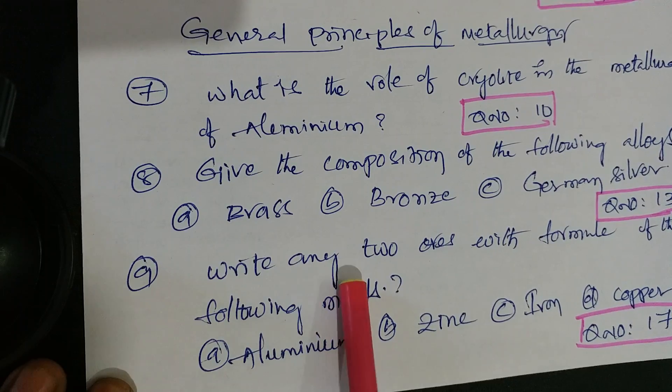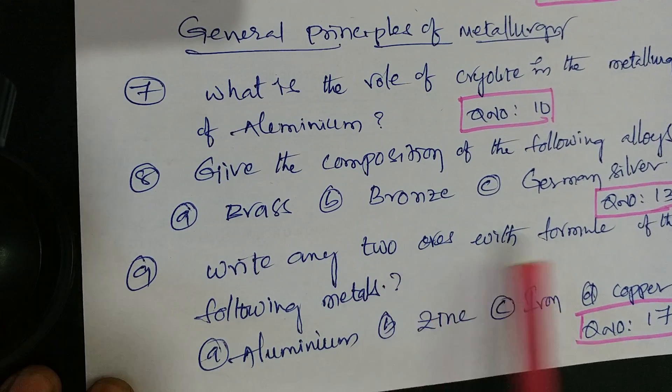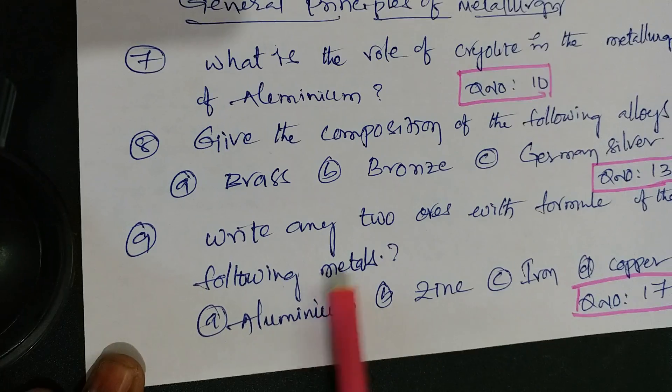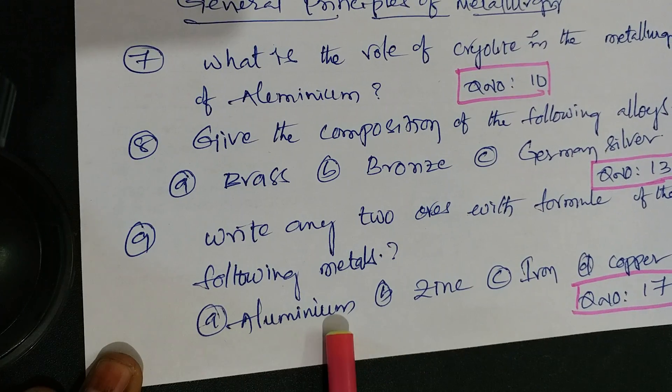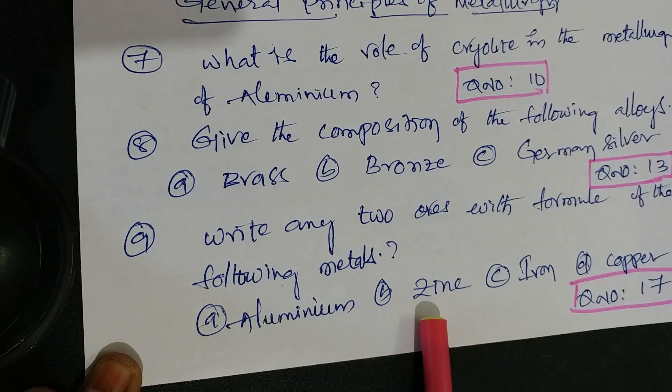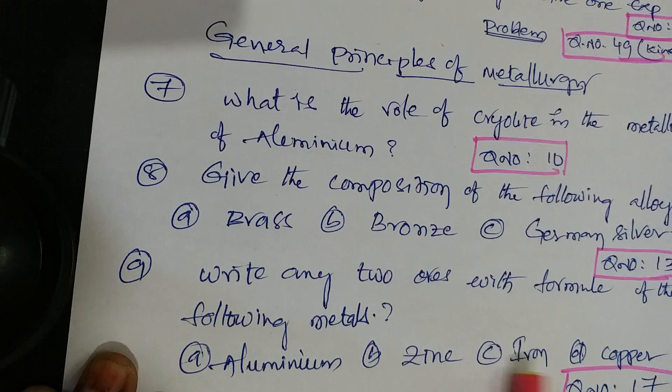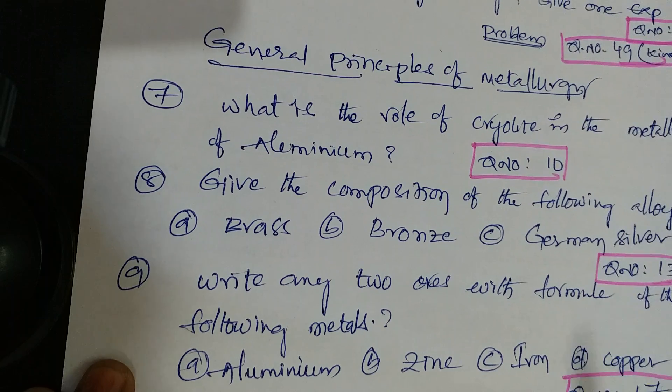Write any two ores with formula of the following metals: aluminium metal, zinc metal, iron metal, and copper metal - it is question number 17 from material.